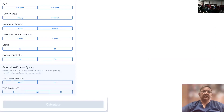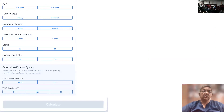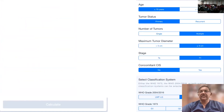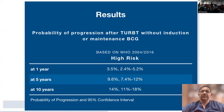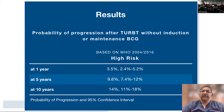If we place this patient on our risk calculator — which you can download on your mobile phones, both Android and iPhone applications are available — this patient is less than 70 years, has a primary tumor, multiple tumors, 3 cm, T1, no concomitant CIS, and high grade. Based upon these parameters, this patient is categorized as high risk, with a 1-year progression of 3.5%, 5-year about 10%, and 10-year about 14%. Based on these factors, you would recommend treatment.